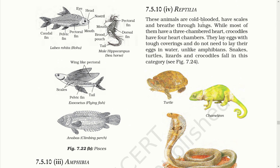Reptilia. These animals are cold-blooded, have scales and breathe through lungs. While most of them have a three-chambered heart, crocodiles have a four-chambered heart. They lay eggs with tough coverings and do not need to lay their eggs in water unlike amphibians. Snakes, turtles, lizards and crocodiles fall in this category.